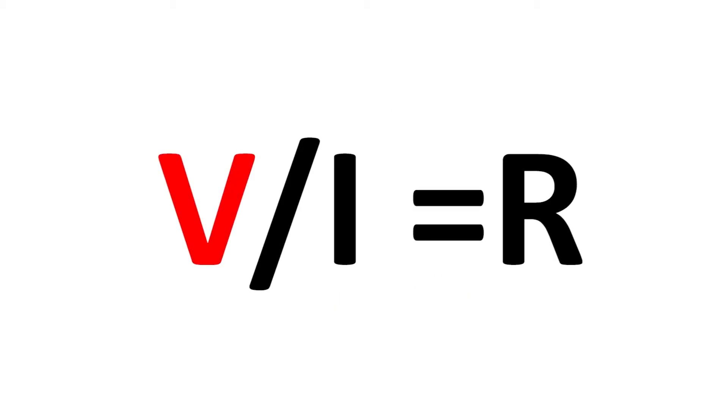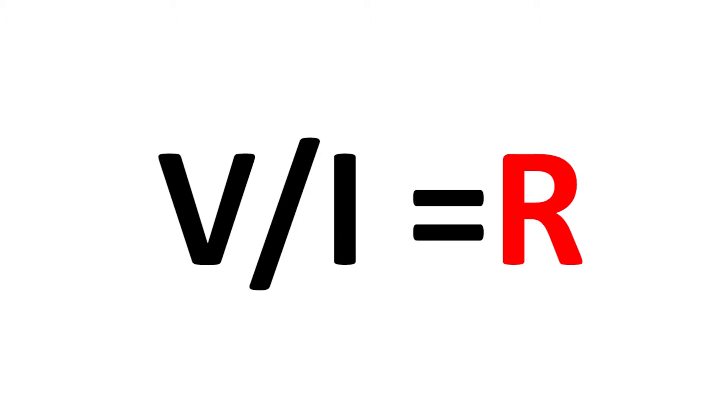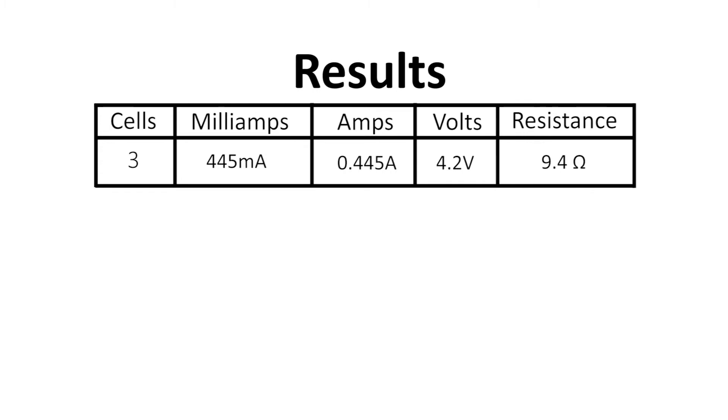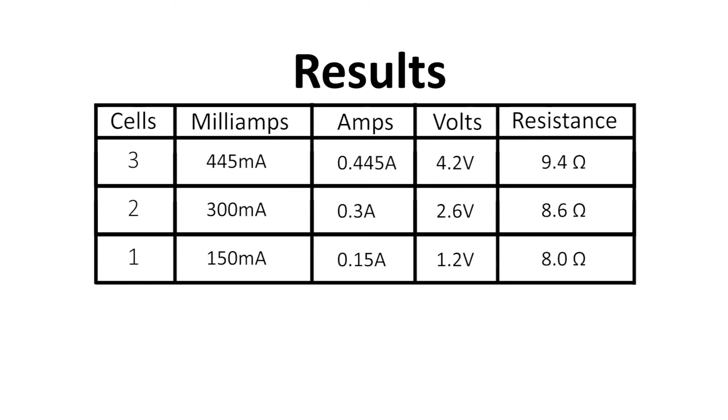The results obtained with three cells were 445 milliamps and 4.2 volts. With two cells, the readings were 300 milliamps and 2.6 volts. With one cell, the readings were 150 milliamps and 1.2 volts.